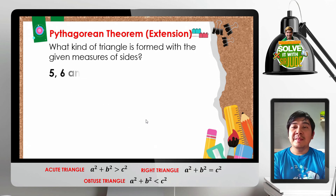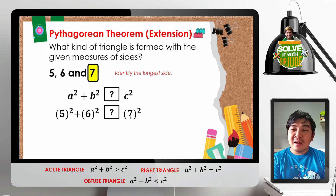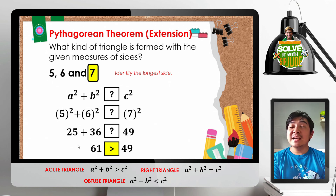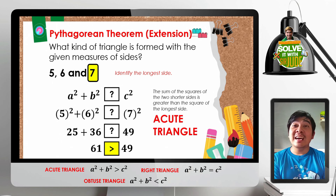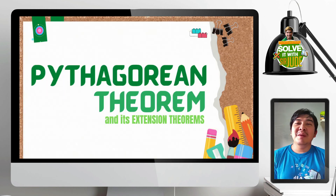For the last extension example, we are given sides 5, 6, and 7. The longest side is 7. Substituting: 5 squared plus 6 squared compared to 7 squared. That is 25 plus 36 compared to 49, giving 61 greater than 49. Since the sum of the squares of the two shorter sides is greater than the square of the longest side, the triangle formed is an acute triangle.